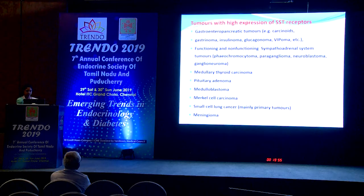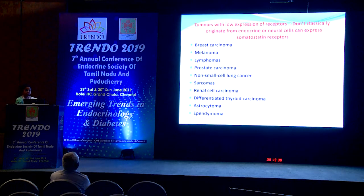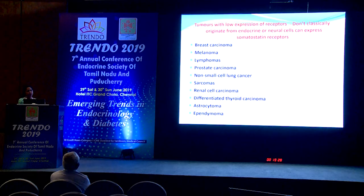Neuroendocrine tumors with high receptor expression include almost every NET we know, as well as some unusual tumors like Merkel cell carcinoma, small cell lung cancer, and meningiomas. Other tumors with low expression of these receptors don't originate from neuroendocrine cells but can still express receptors, and targeting them can help in therapy decision-making.